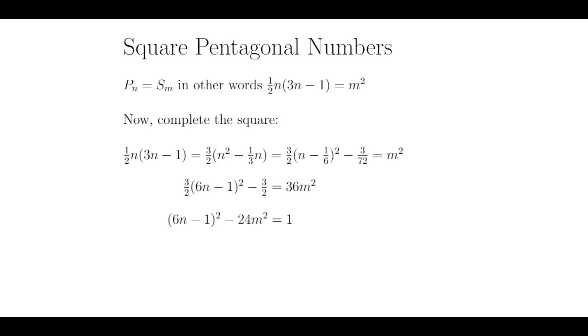What we are left with is 6n minus 1 squared minus 24m squared equals 1.